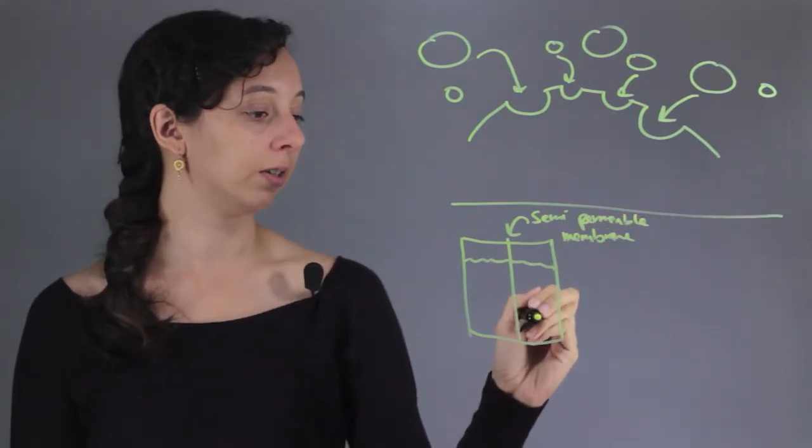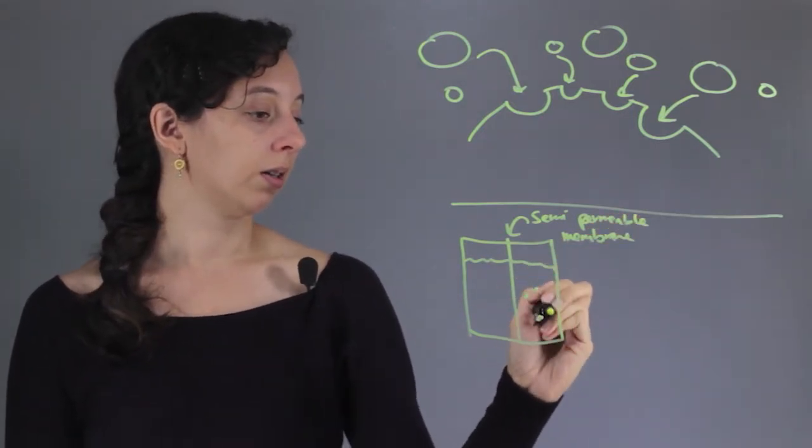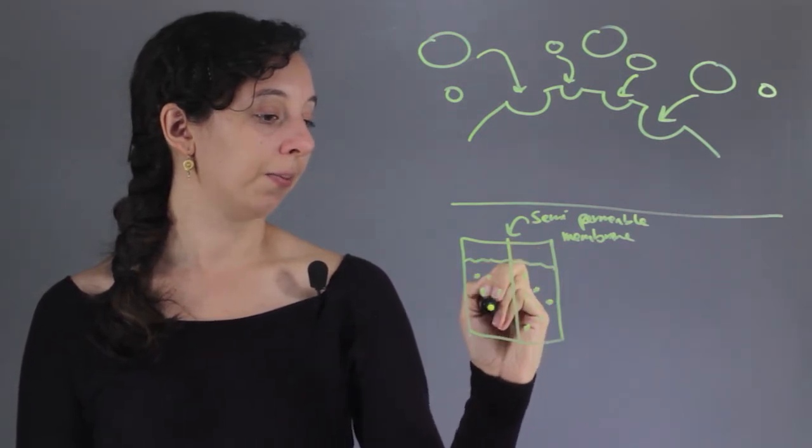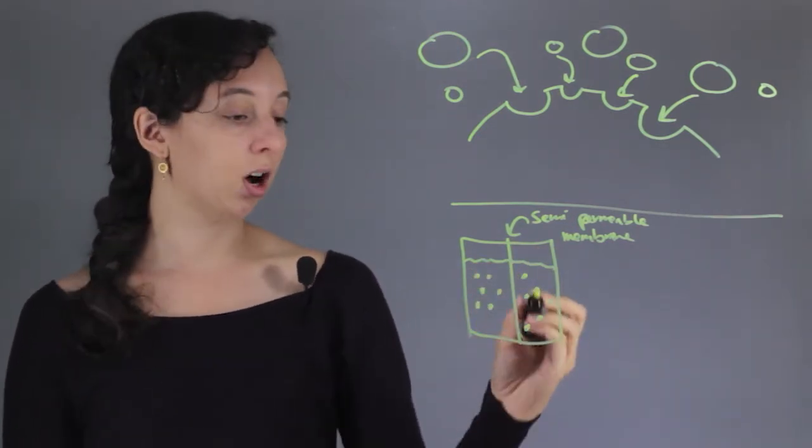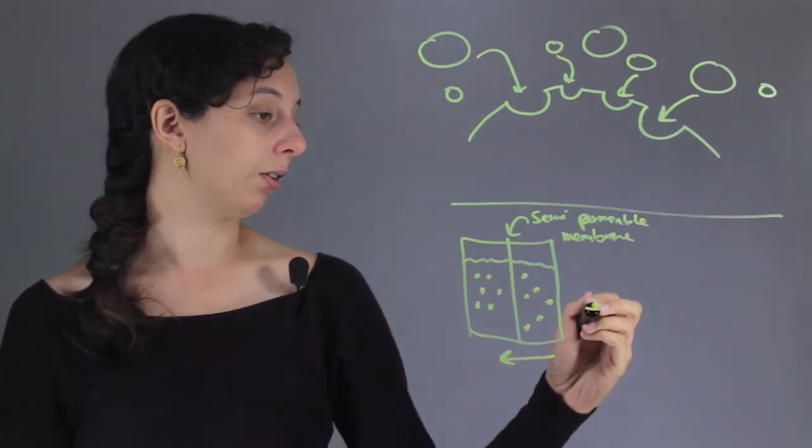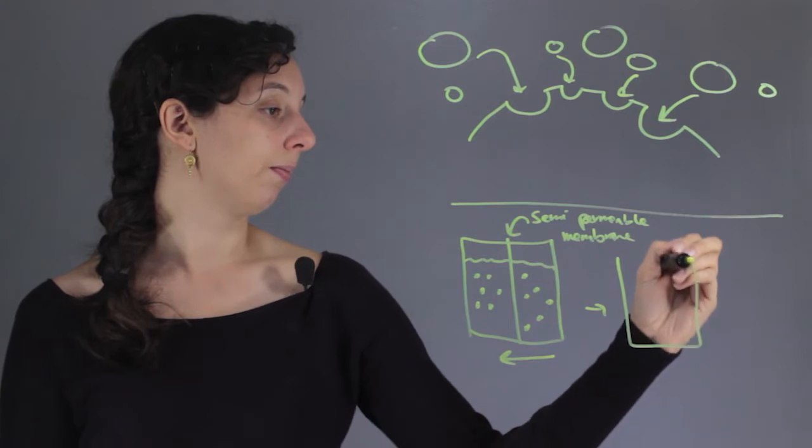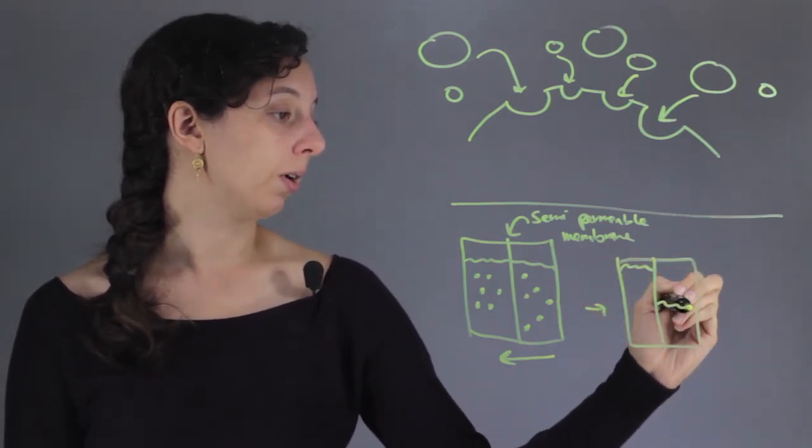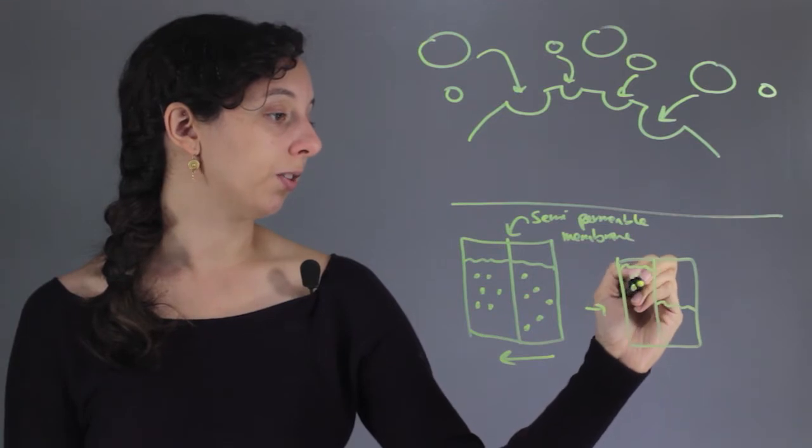And we have some impurities. Let's say in this case, all impurities can go to the left, but never the right. So after a while, you're going to have your water level rise up here and lower here as all the impurities get over here.